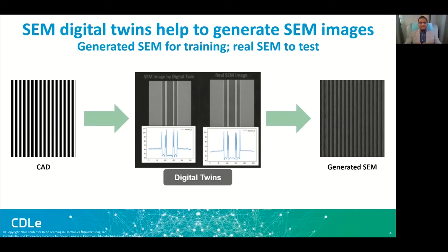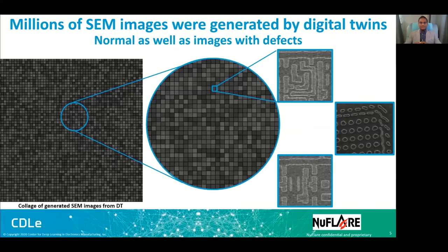Using the digital twin, we could generate millions of SEM images, including normal geometry patterns as well as defects. On the left-hand side you can see a collage of millions of generated SEM images, and on the right-hand side you can see some normal SEM images generated from the digital twin, with errors as well. We also generated some curvilinear shapes.